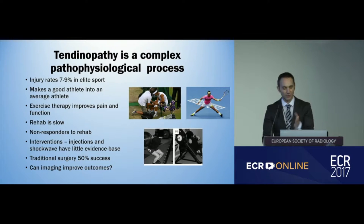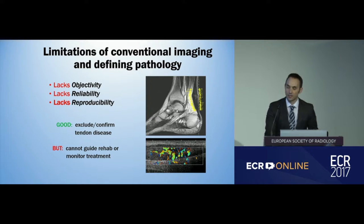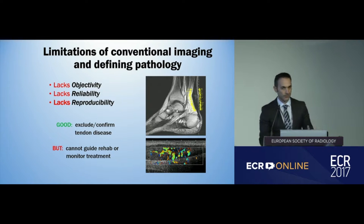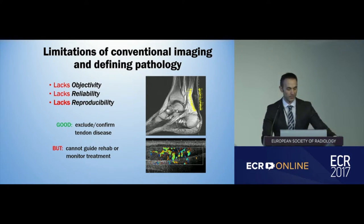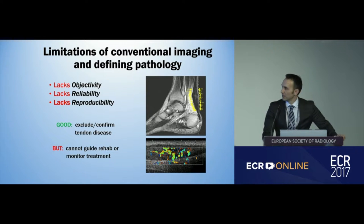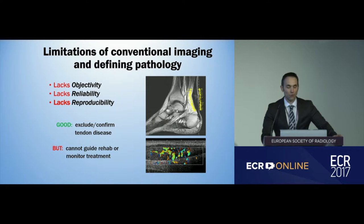This is where shear wave elastography may help us define and improve these patients presenting with difficult tendinopathy. The problems with conventional imaging are that they lack objectivity — they're fantastic for excluding or confirming tendon disease, but they have a lack of objectivity, reliability, and reproducibility. So we can't use conventional imaging — MRI and ultrasound — to guide rehabilitation or monitor treatment.